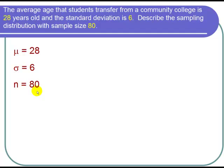Now let's find the mean and standard deviation for the sampling distribution. First thing the Central Limit Theorem says is that the mean for the sampling distribution μ sub x bar is the same as the mean for the original population. So μ sub x bar equals 28.